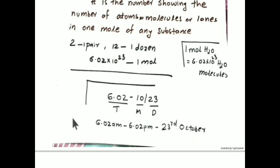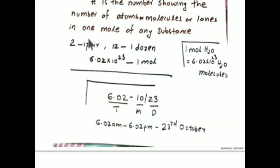Now a logical, non-chemistry explanation using an example: consider two apples in your hand — you call that one pair of apples. Consider 12 apples — you call that one dozen apples. Likewise, if you have 6.02 × 10²³ apples, that is a huge amount, and you would call that one mole of apples. So: 2 means one pair, 12 means one dozen, and 6.02 × 10²³ means one mole.